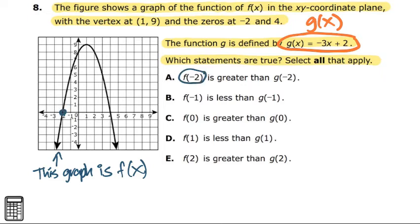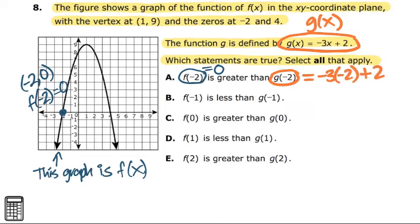Alright, so let's do the first one. f of negative 2. So if I go to my graph and look at negative 2, you'll see that it's negative 2 comma 0. And that means that our y value is 0. And I'm going to see if it's greater than g of negative 2. So g of negative 2, since I don't have any kind of visual, I'm going to have to plug it in. So that will be negative 3 times that negative 2 plus 2. All I'm doing is plug in negative 2 for x. I will get a positive 8. So is 0 greater than 8? The answer is no.